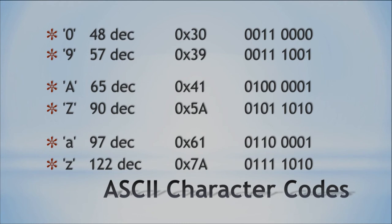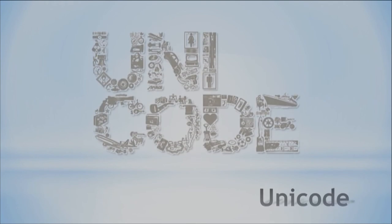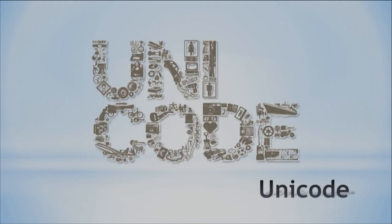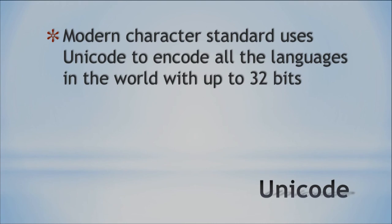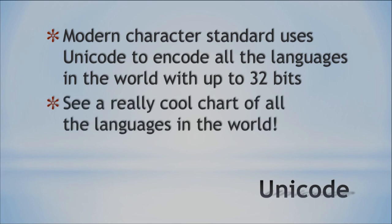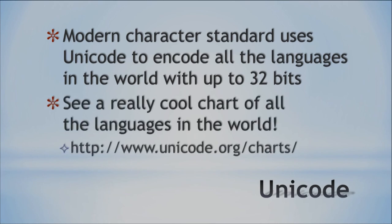ASCII is great, but it only represents letters from the English language. To represent all the languages in the world, we have Unicode. You can encode any language because Unicode is up to 32 bits — lots of space to represent all these characters. Go online and check out the Unicode chart; it's got all kinds of languages, even Egyptian letters and Old Persian letters. Check that out — and that's it for today! We'll see y'all a little later.